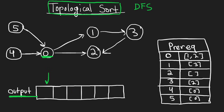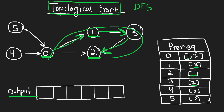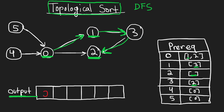Let's start at node zero. We don't update our output yet — we want to take the prerequisites first. From our prereq map we go to node one, which has a single prerequisite: three. So we need to take three's prereq first, which is two. Now we're at course two, and it does not have any prerequisites. So we've taken the path zero→one→three→two, and since two has no more prereqs, we can add it to our output.